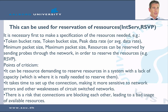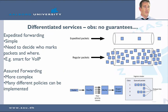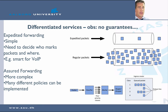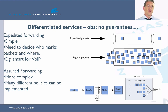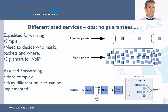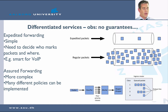What you can do instead is use differentiated services. In differentiated services, you differentiate between expedited forwarding and assured forwarding. With expedited forwarding, we simply do a kind of priority — we have expedited packets and regular packets. What we need to decide is who marks the packets and where priority is decided. It is useful for example for voice over IP in a company network, giving it higher priority. It is more tricky in the global internet — who decides which packet gets higher priority, what is the business model, and who pays when passing through different networks?